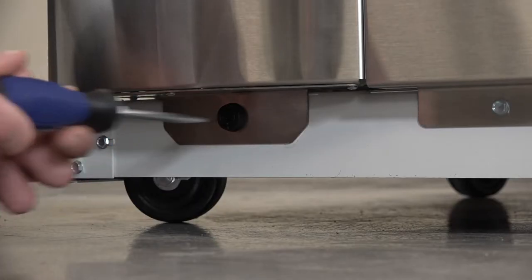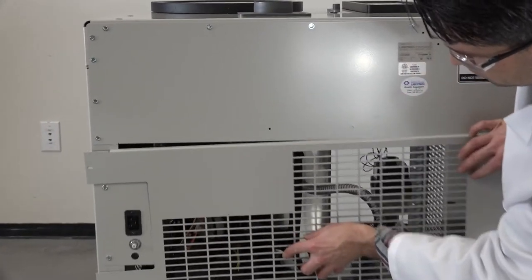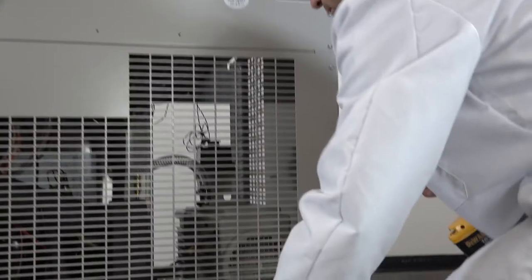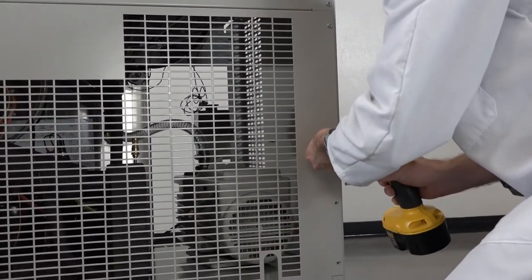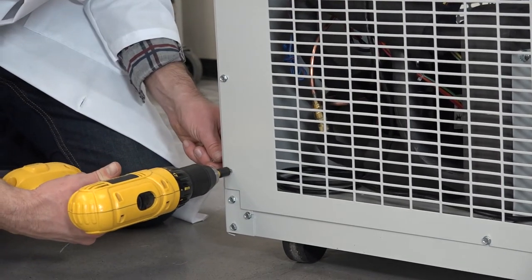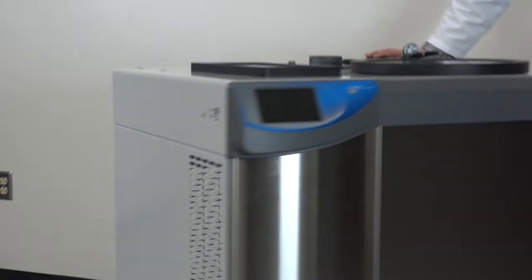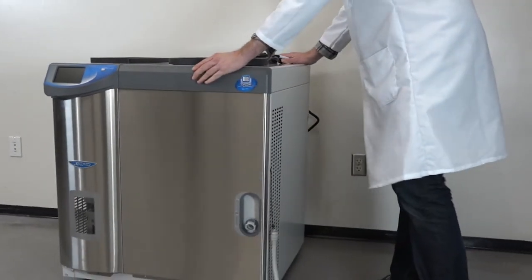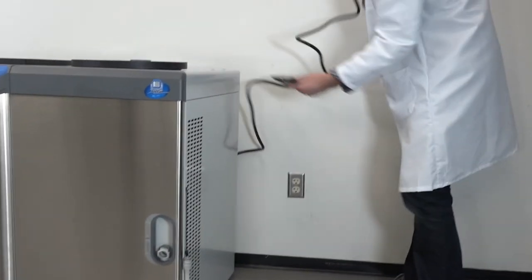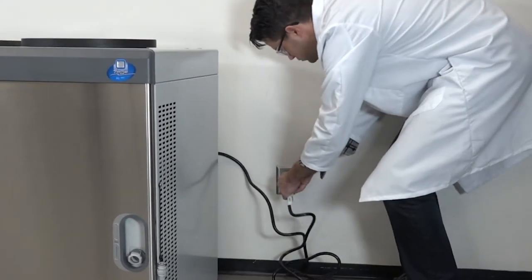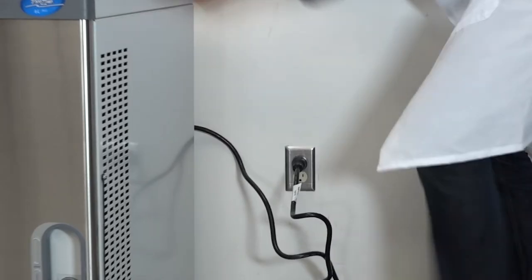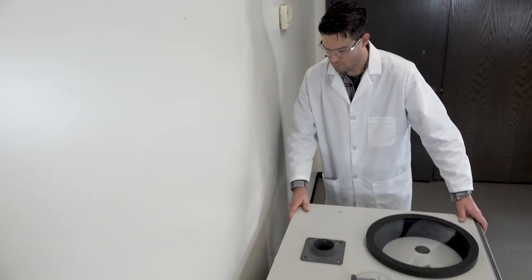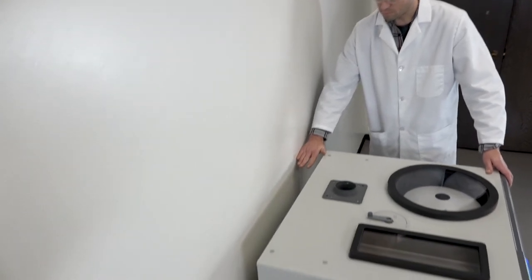Now reinstall the front and rear panels. Move your Freezone to the location where it will be used. Ensure the installation site is level and of solid construction, with access to the proper electrical source. The final location should allow a minimum of 3 inches between the back and both sides of the freeze dryer and adjacent wall surfaces.